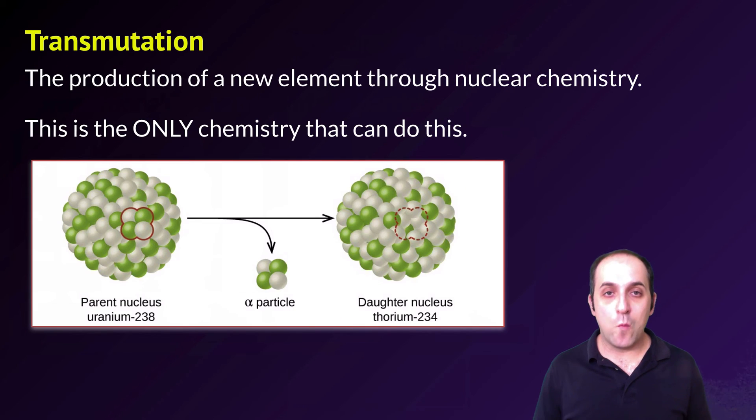It's important to understand that when an unstable radioactive nuclei produces nuclear radiation, the identity of that atom will change. This is called a transmutation. So to go back to our example of uranium-238, it produces an alpha particle and in so doing its identity changes to thorium-234. That's because it's given off two protons and since its atomic number has now shifted, its identity has changed. This is the only time in chemistry that we'll ever see this kind of thing happening.